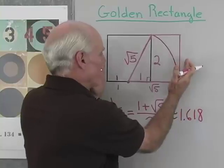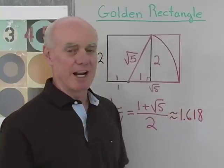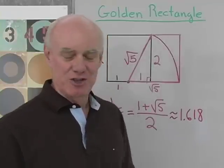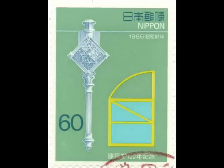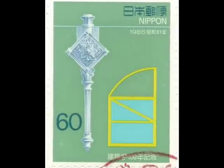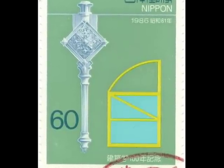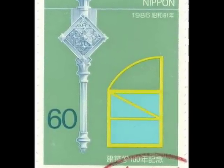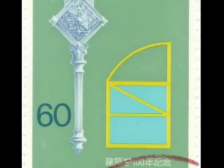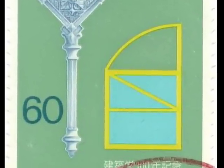The golden rectangle — when I find the ratio of the length to width in that, I end up with what's called the golden ratio. I want to show you a little postage stamp from Japan that has this little derivation on it, shown sort of vertically rather than horizontally the way we did it. It's a very important derivation in mathematics — so important that they actually put it on a postage stamp.